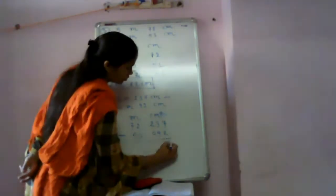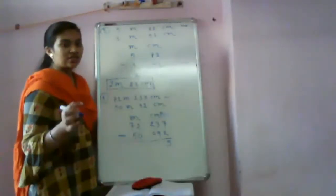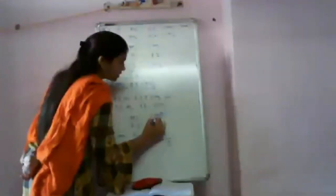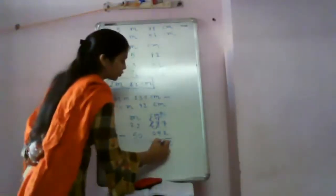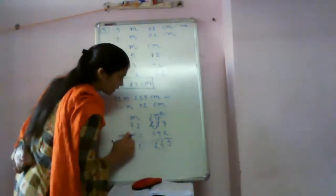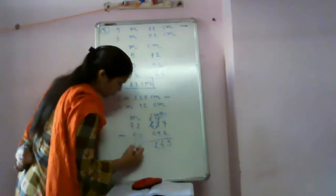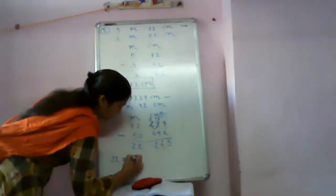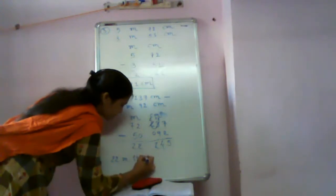Start from the ones place of centimeters: 7 minus 2 equals 5. Then 3 minus 9 — we cannot subtract 9 from 3, so we take a borrow from 2, making it 1, and 3 becomes 13. 13 minus 9 equals 4. Then 1 minus 0 equals 1. Then 2 minus 0 equals 2. Then for meters: 7 minus 5 equals 2. The answer is 22 meters 145 centimeters.